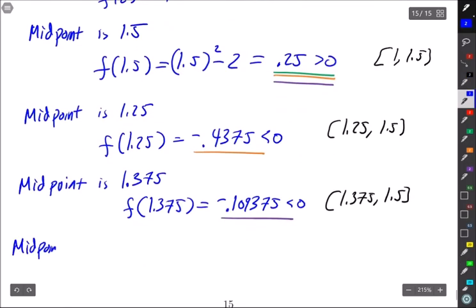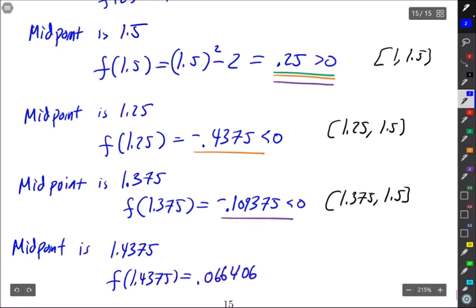And then one last step, midpoint is 1.4375 and f(that) is 0.06640625 which is positive. Give me a new interval of [1.375, 1.4375].